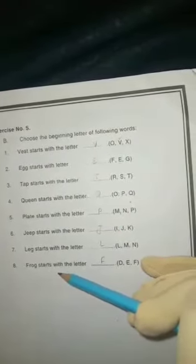Vest starts from V, so you tick here V and write here V. Like this, you have to complete till question number 8.